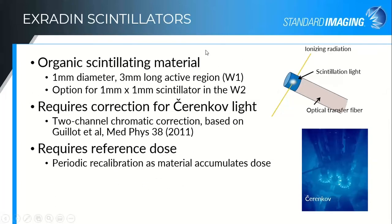So what are scintillators really? It's an organic scintillating material — depending on which detector you have, it's either a one millimeter diameter, three millimeter long, or a one millimeter diameter, one millimeter long active scintillating region. That scintillating material is coupled to an optical transfer fiber that is PMMA — water equivalent at these energies, at least close enough that it's not affecting your measurements. The scintillator itself also matters and it is water equivalent as well.